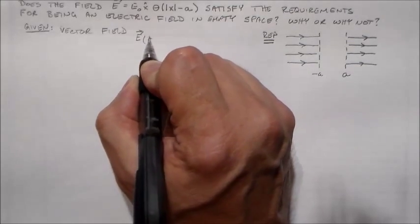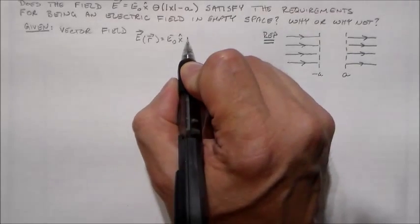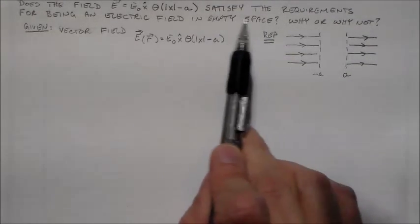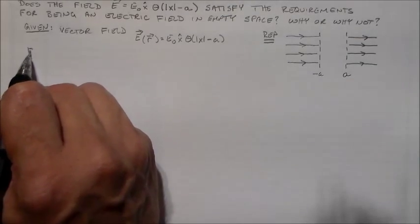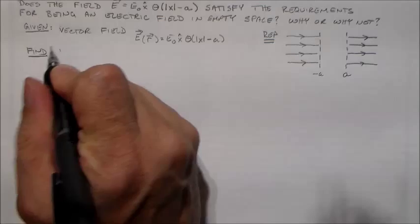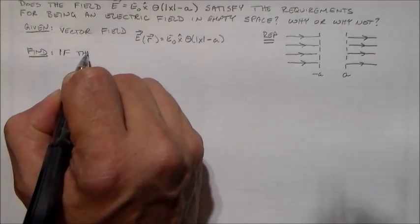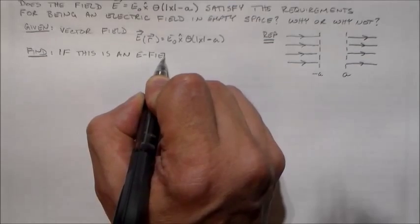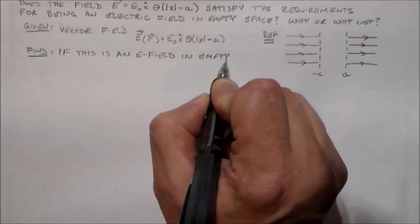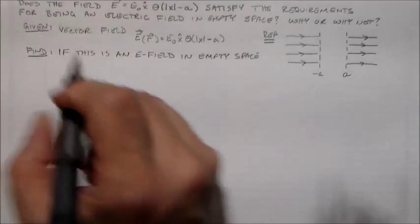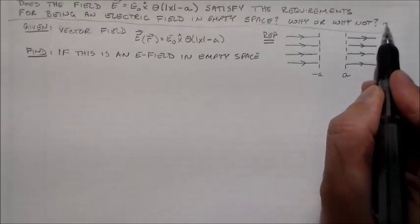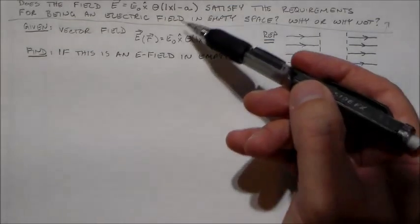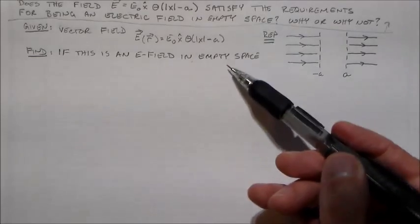It could be a good electric field and just not be a good electric field in free space. We'll find out which of those it is. And it's E of R is equal to E naught x hat theta absolute value of x minus a. This is the heaviside step function again. Now we want to know if it satisfies the free space equations. This stuff here where I've written this out up above, that doesn't go on your homework when you turn it in. I already know what that is. That's just the problem statement.